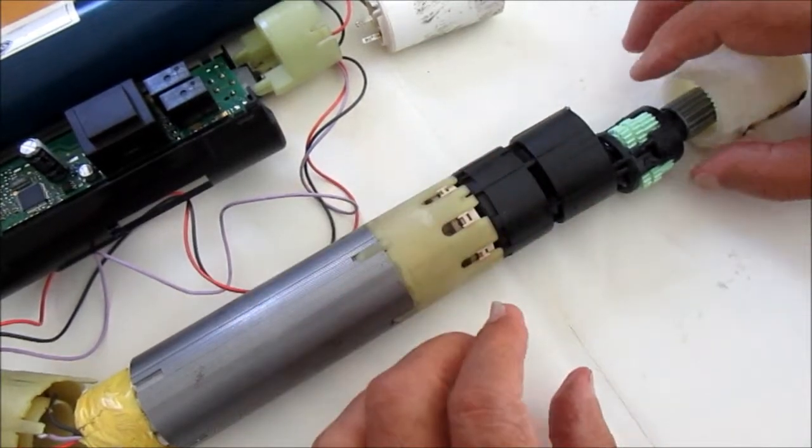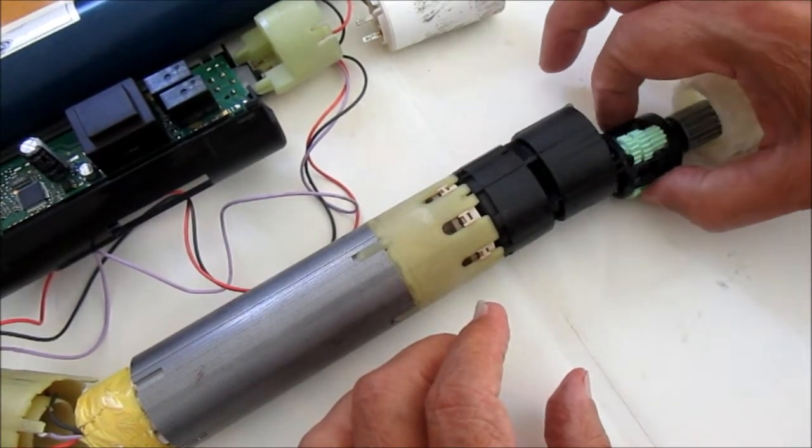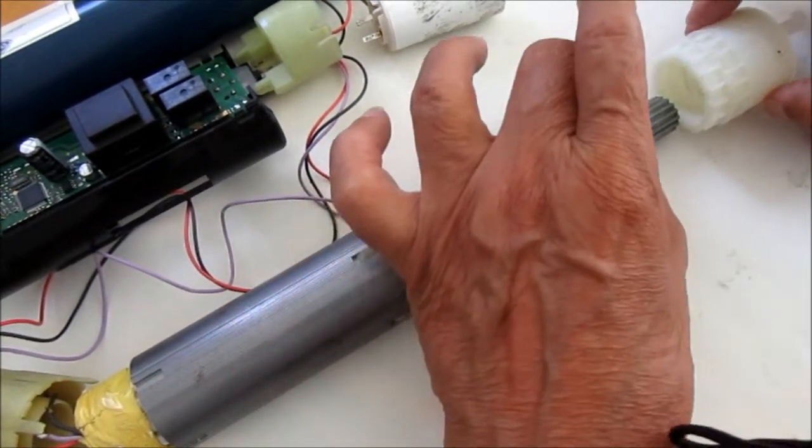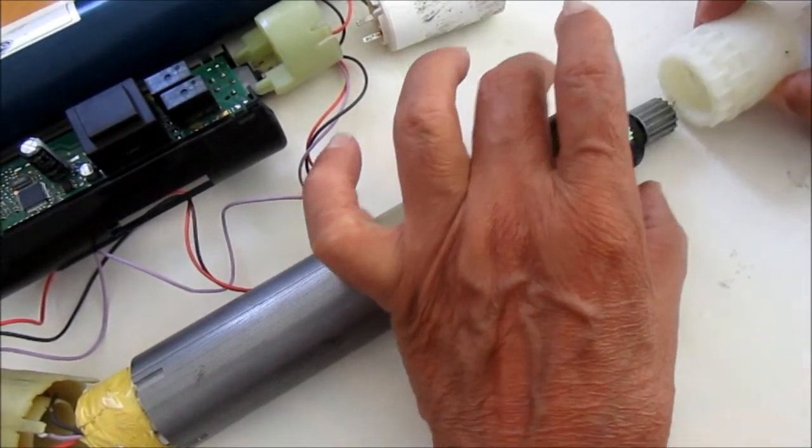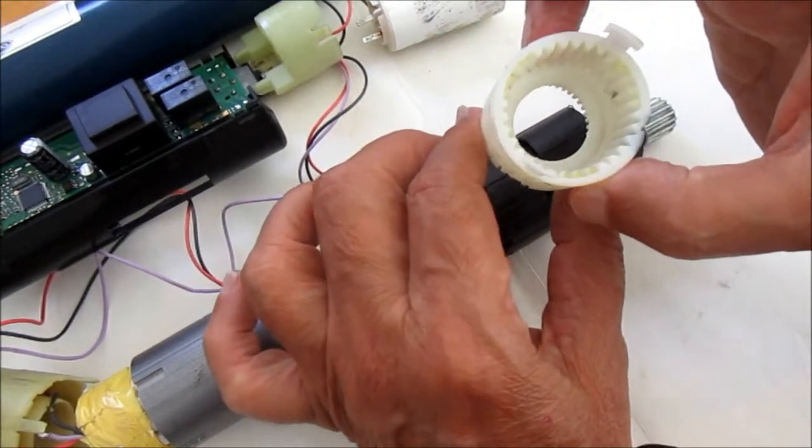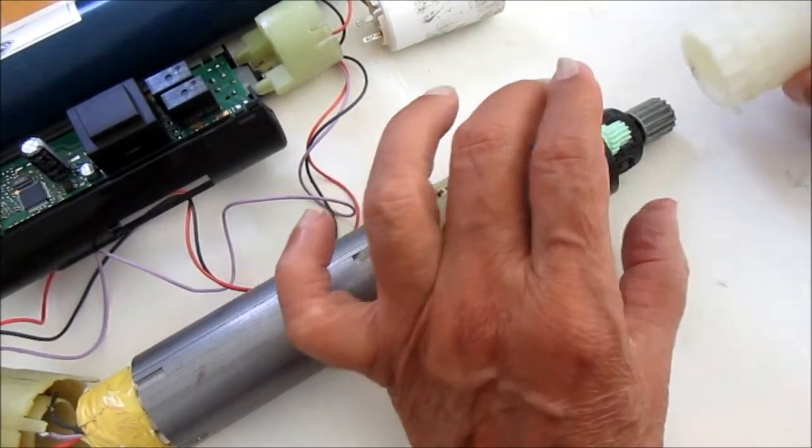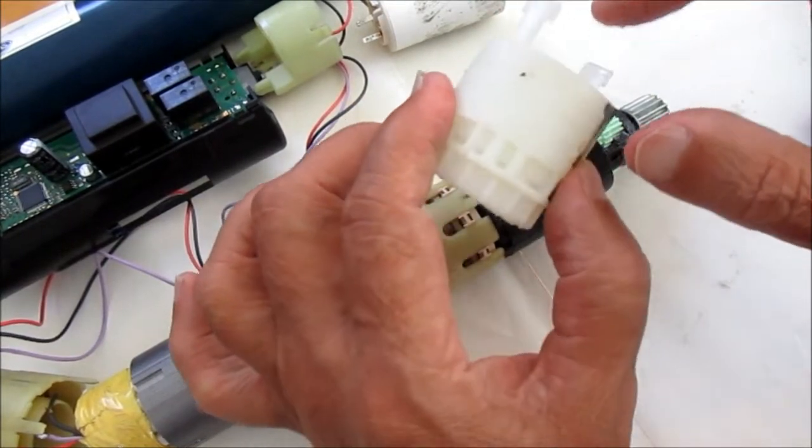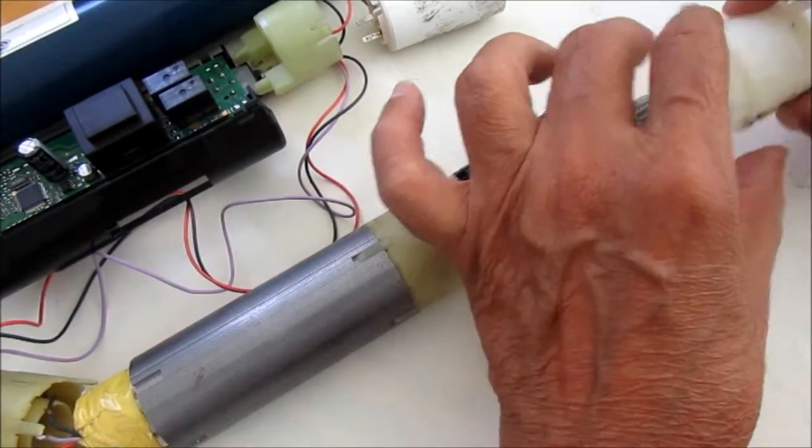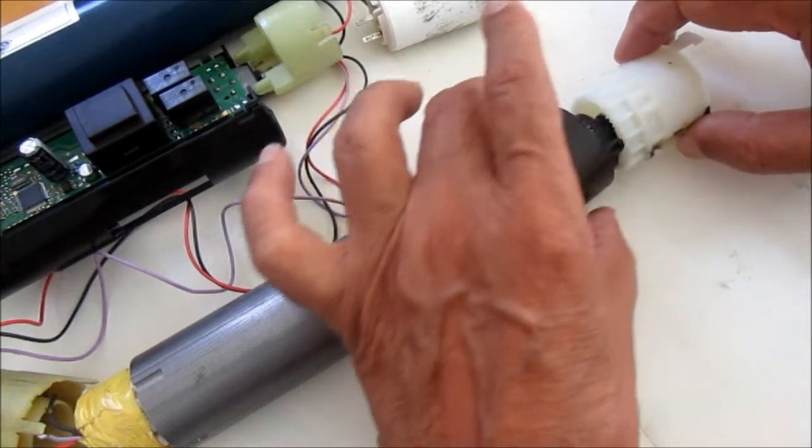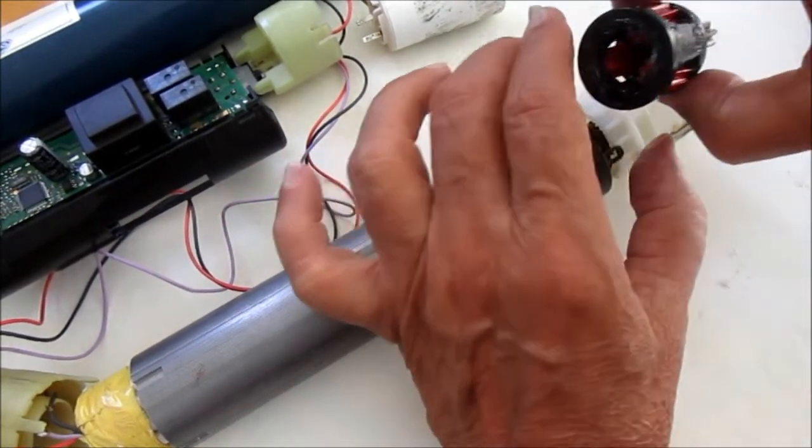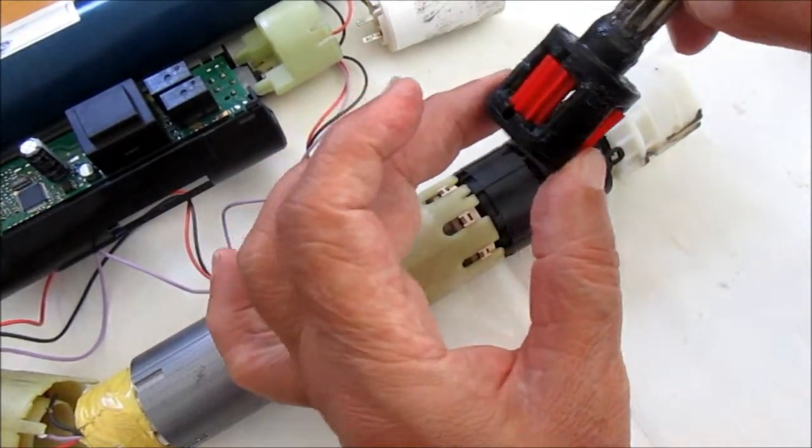And here is the gearbox which reduces the RPM. And there's another segment here which reduces it further with internal gears. And each of them clips together with these little clips. So that goes like that. And there's another set of gears, gearbox, and the final drive which goes into this.